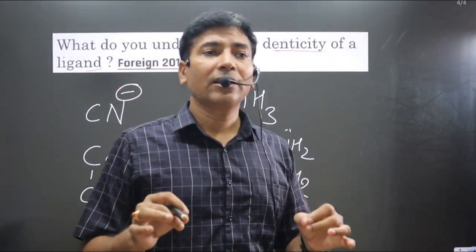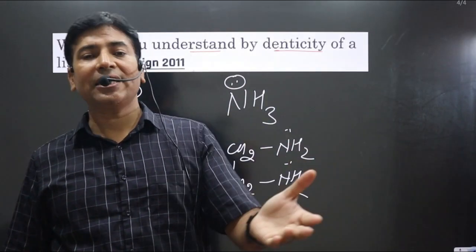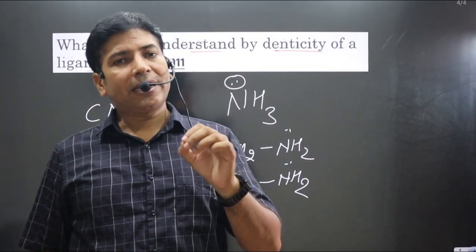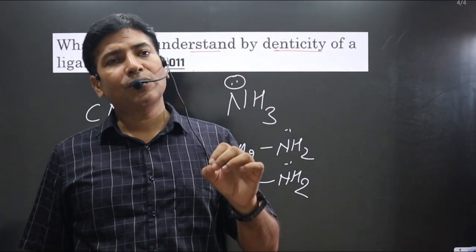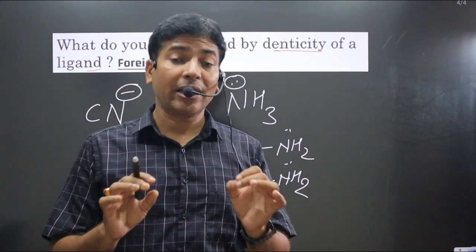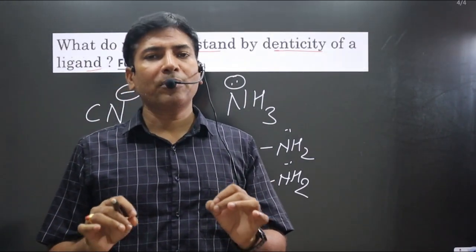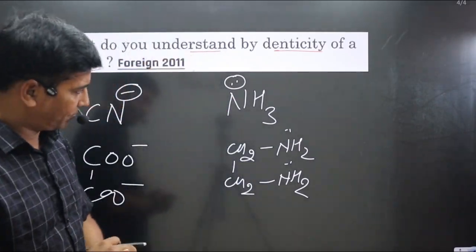So, based on the capacity of forming coordinate bonds by the ligands with the central metal atom, the denticity of ligands is categorized as unidentate, didentate, tridentate, tetradentate, pentadentate, and hexadentate. If you like this video, please share and subscribe to the channel.